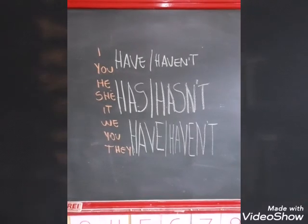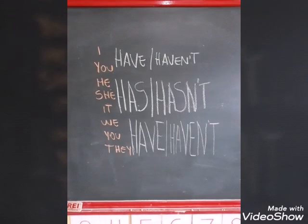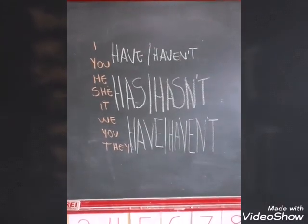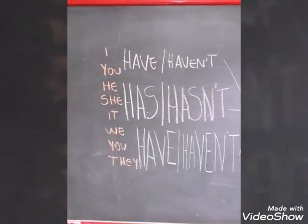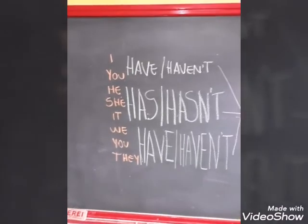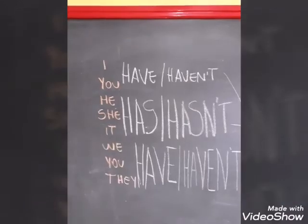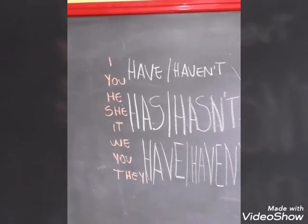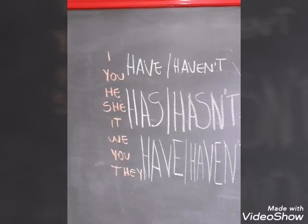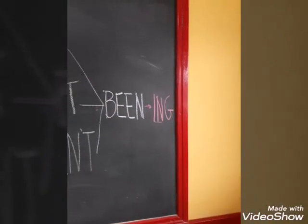Sujeito mais auxiliar. Na afirmativa: have ou has. Na negativa: haven't. Continuando a estrutura: sujeito, auxiliar, verbo to be no particípio, que seria been. Sujeito, auxiliar, been. Finalizando a estrutura — afirmativa: sujeito, mais auxiliar have ou has, mais o been, mais o próximo verbo no gerúndio, ou seja, terminando com -ing.